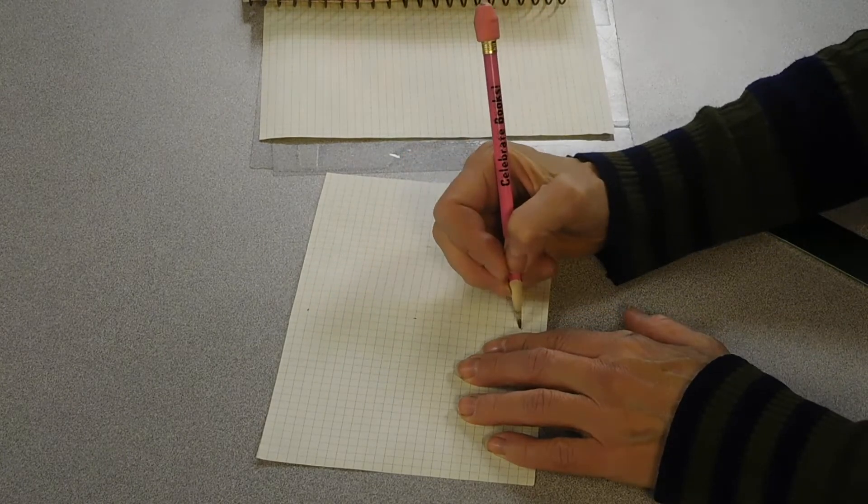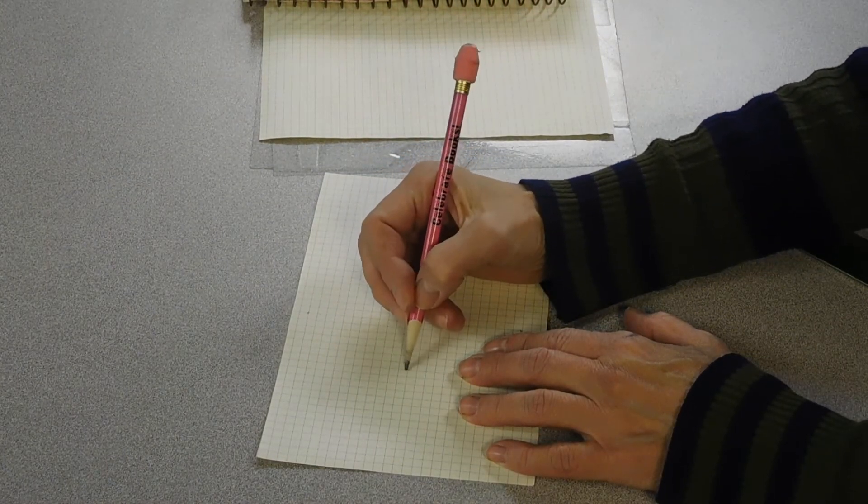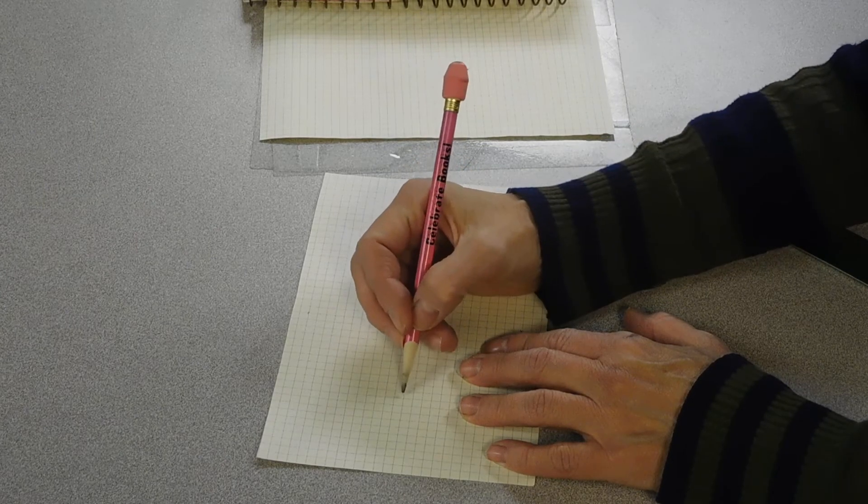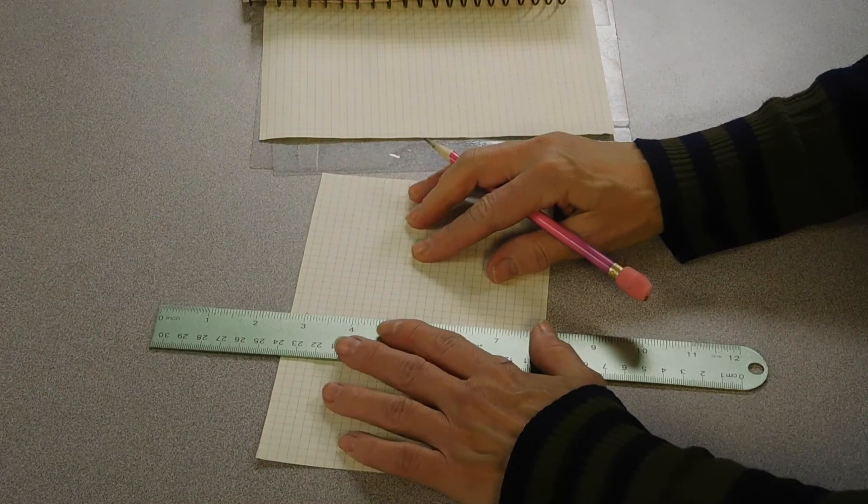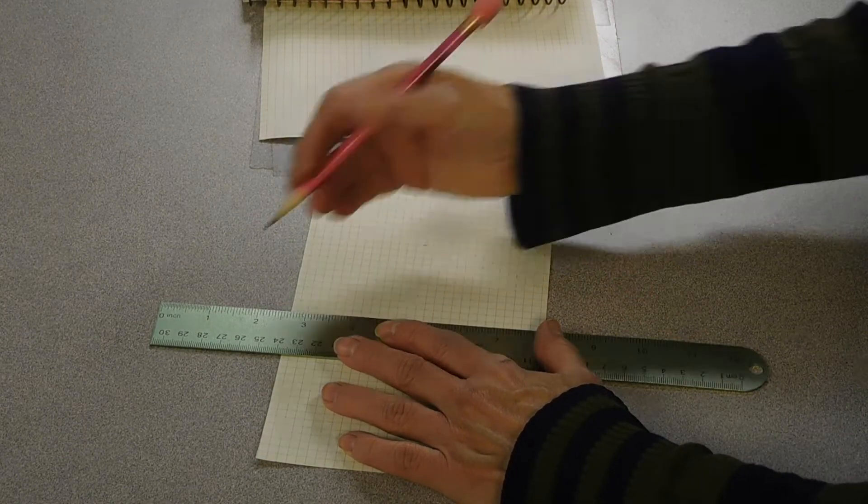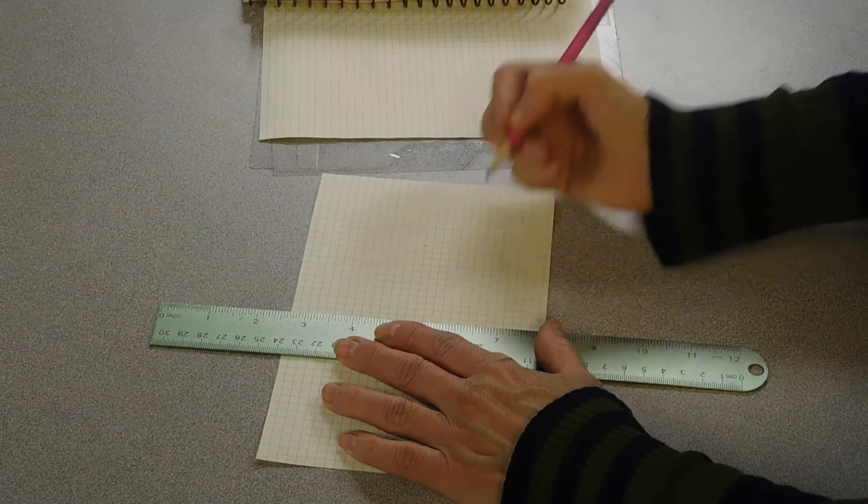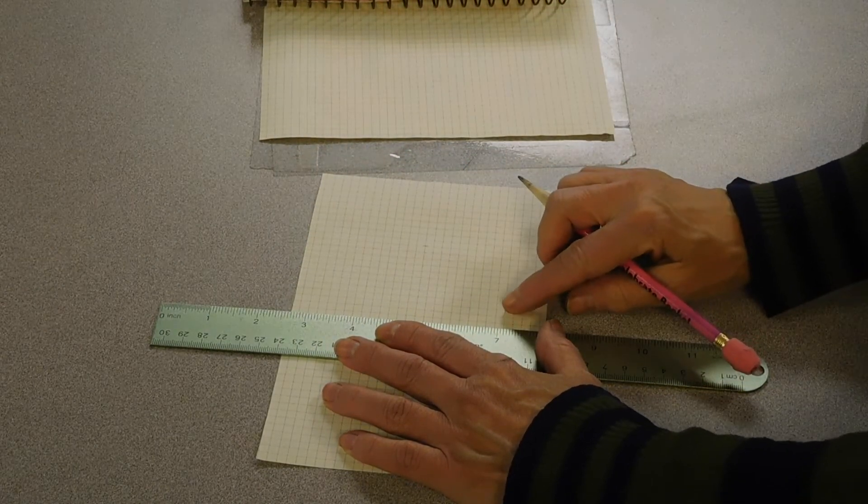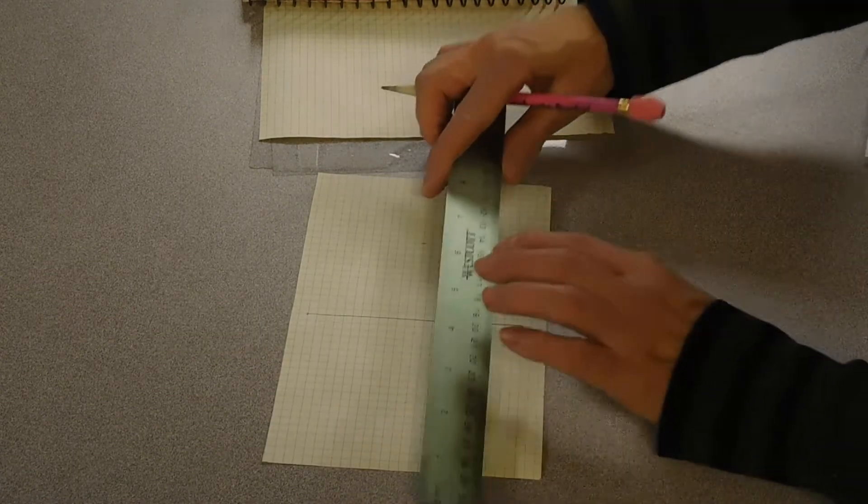And down 12. Now I'm going to make a line to create my axes. This is my x-axis.